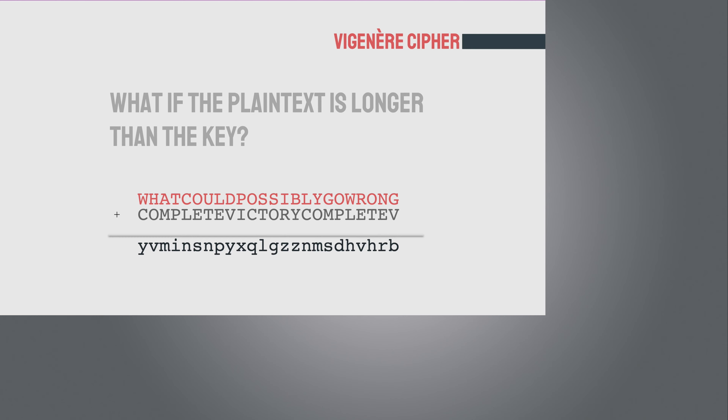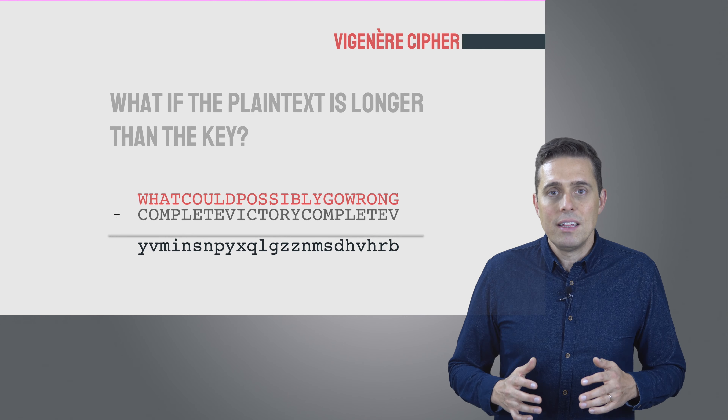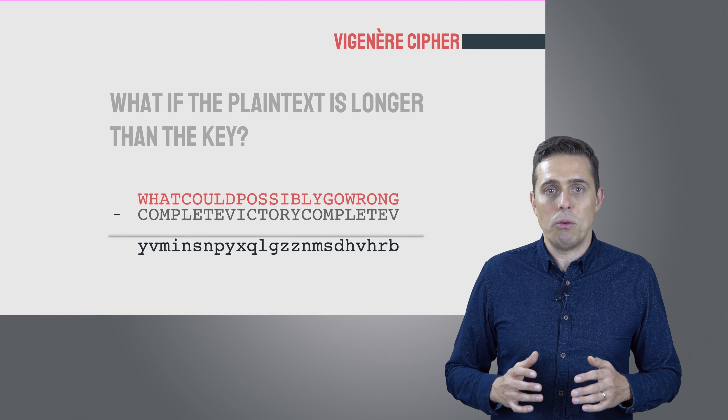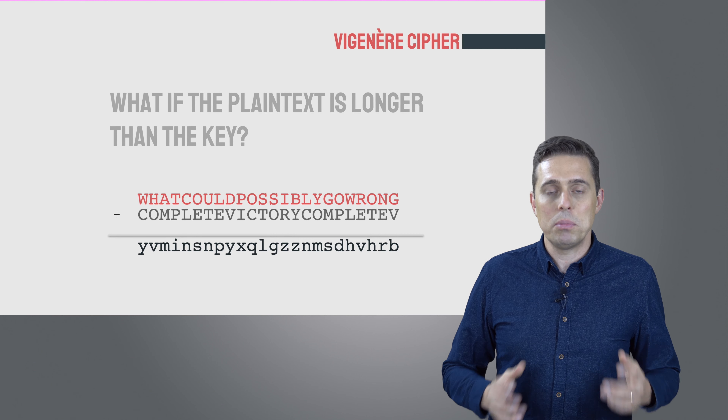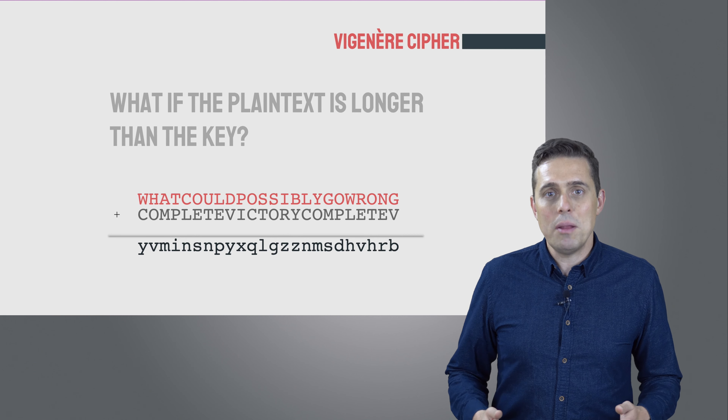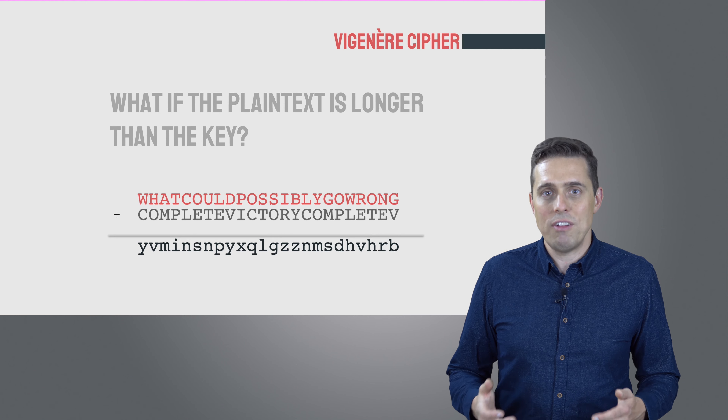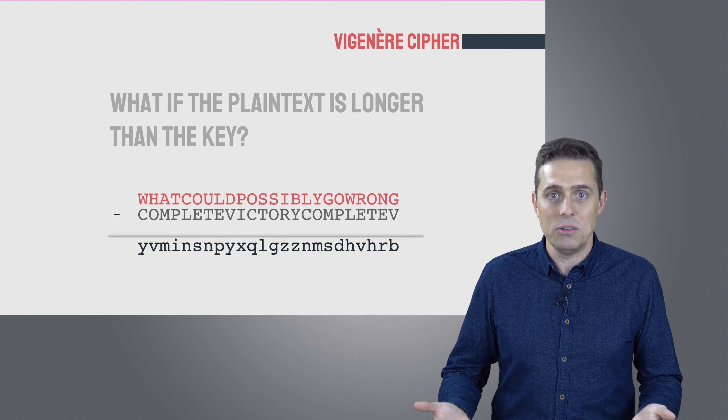Now we've got another problem: what happens if the plaintext is longer than the key? The historical way to deal with this was just to repeat the key passphrase again and again for the length of your message. In fact, the Confederate army did this in the Civil War — they used the passphrase 'complete victory' over and over. Union spies eventually figured this out and were able to decrypt all the messages because the key was being reused.